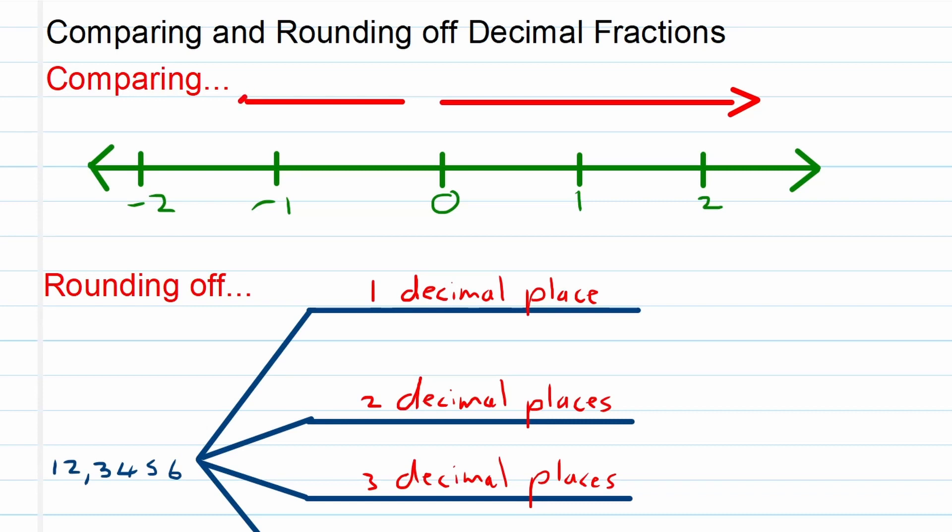And this is important to notice because if you talk about a positive number, two is bigger than one, right? So if I want to write this down, I can say two is bigger than one and one is bigger than zero. Zero is bigger than negative one.